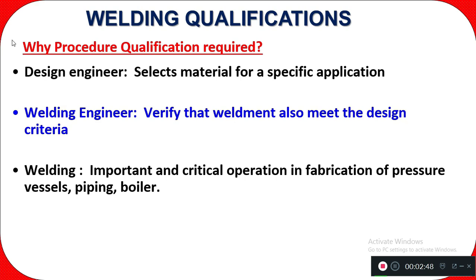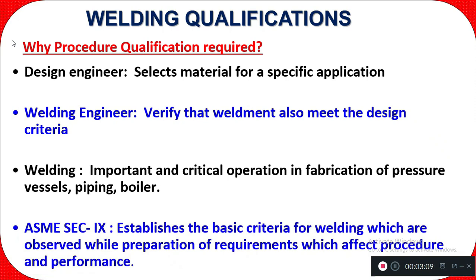Welding is a very important and critical operation in fabrication of pressure piping and boilers. ASME Section 9 applies specifically to pressure piping and boilers. ASME Section 9 establishes the basic criteria for welding which are observed during preparation of requirements that affect procedure and performance — meaning it gives the basic criteria before and during welding that must be followed.